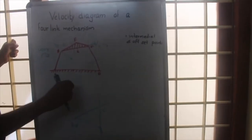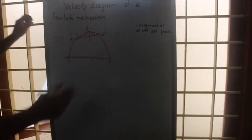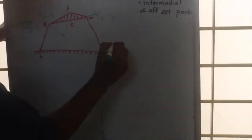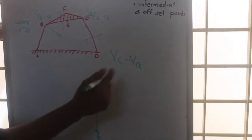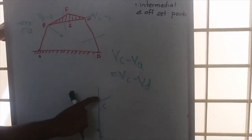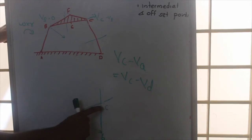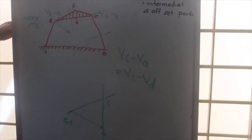To find the velocity of link BC, the vector bc gives VBC. Since A and D are both stationary, VC minus VA equals VC minus VD equals VC itself. So the magnitude of the line from the origin to c gives the actual velocity of C, and the magnitude of the line from the origin to b gives the actual velocity of B.